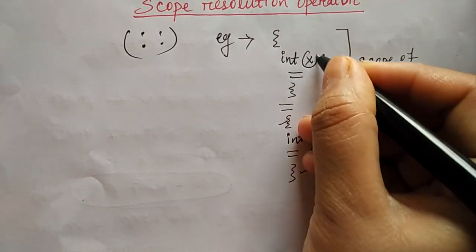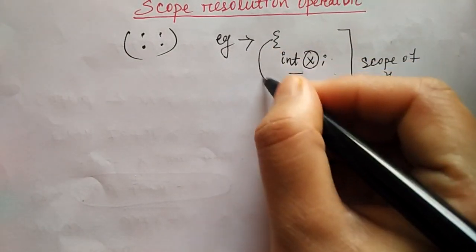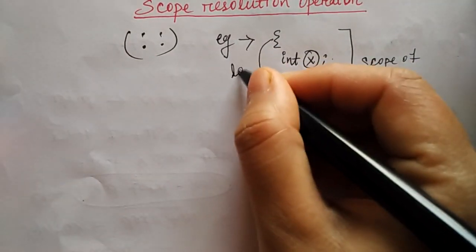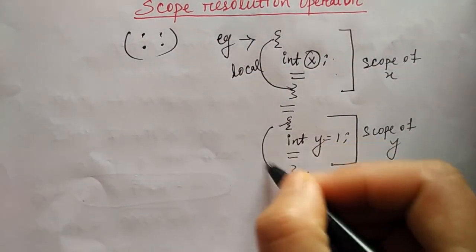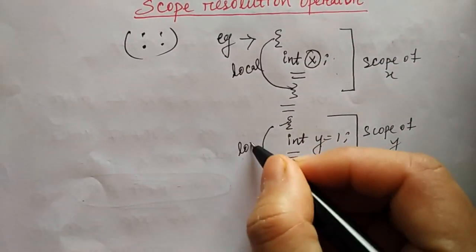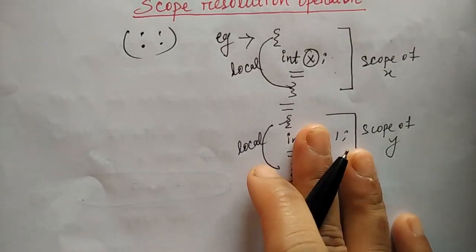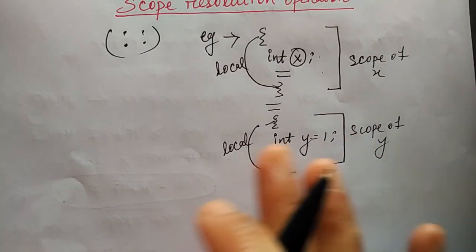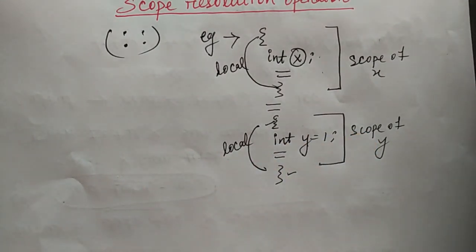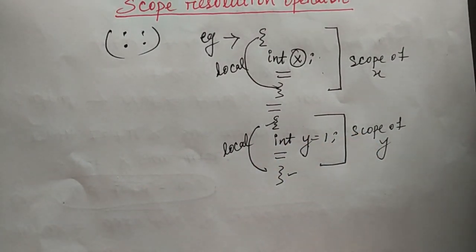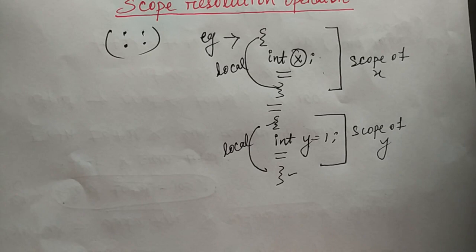The particular x variable is local to this function, and this y is also local to this function. This is the scope and locality of the variable. If the same x variable is declared in two different places, then what will be the meaning? They will have different meanings.